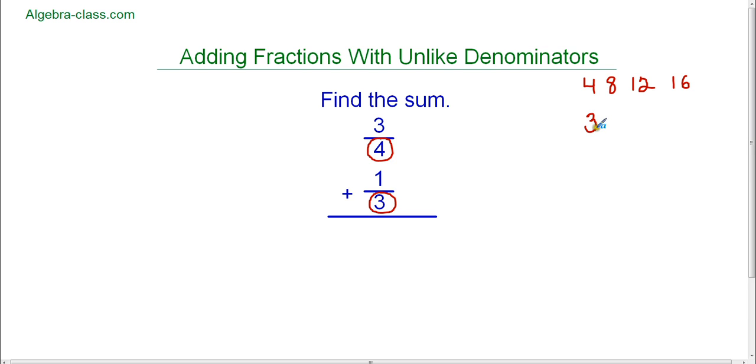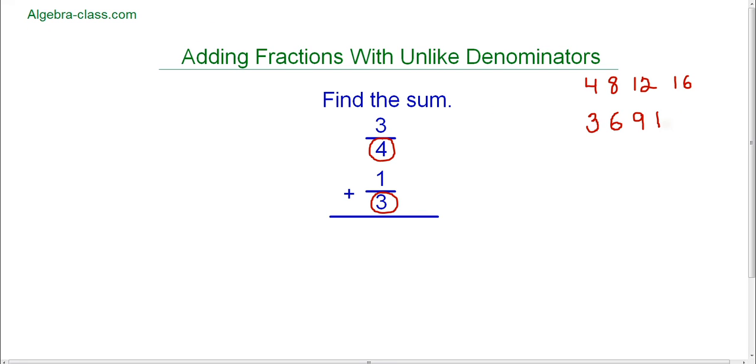We're going to do the same thing for three. We're going to find the multiples of three. So three times one is three. Three times two is six. And three times three is nine. And three times four is twelve. So when we write the multiples of three the reason I'm stopping here is twelve.